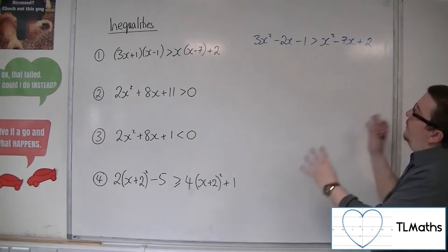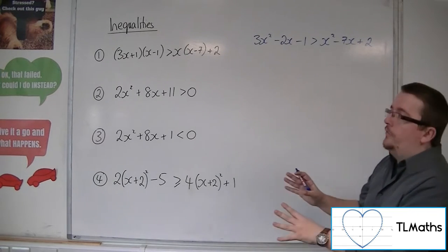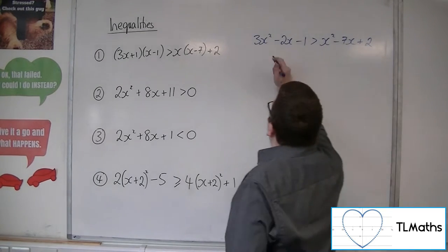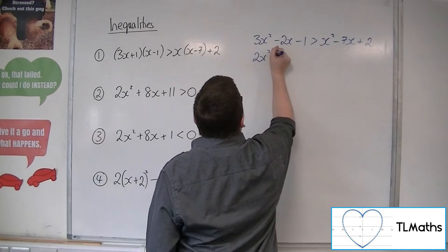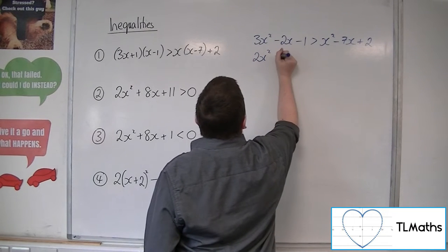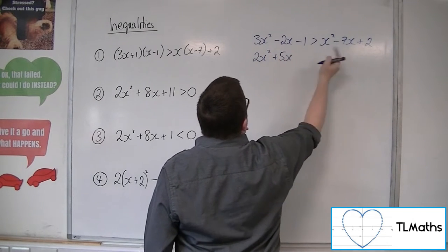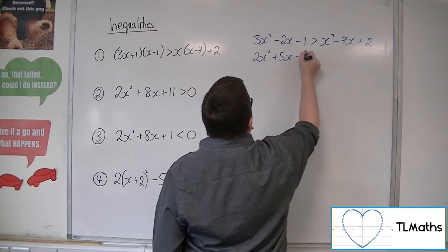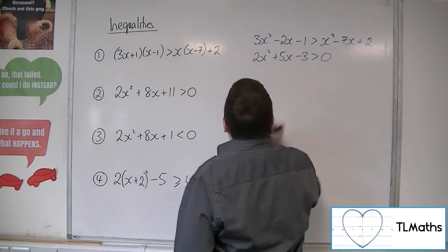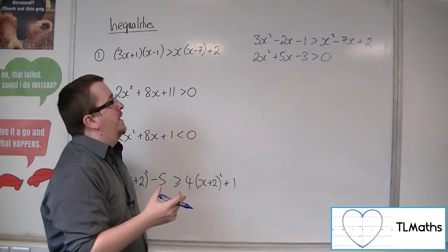We then want to move everything onto one side of the inequality. So I'm going to subtract x squared from both sides, add 7x to both sides, and then subtract 2 from both sides. That leaves us with this quadratic inequality.